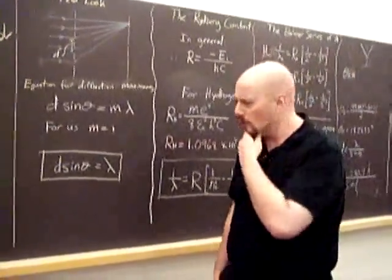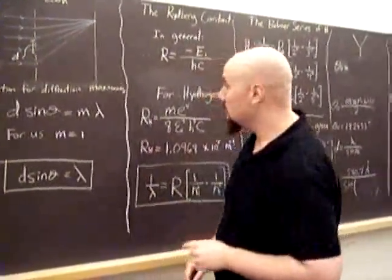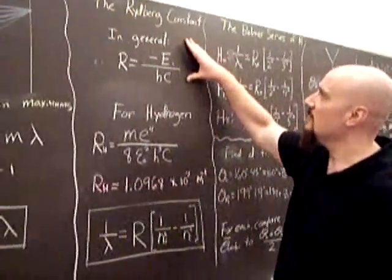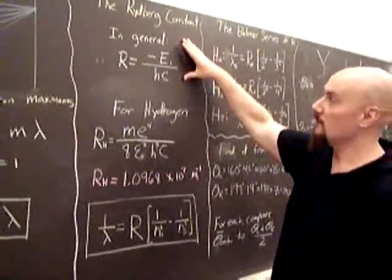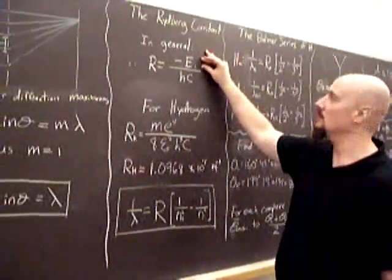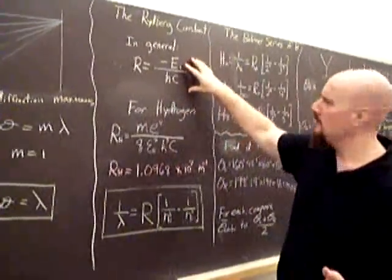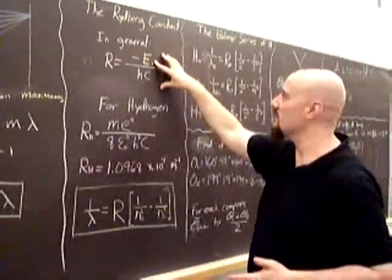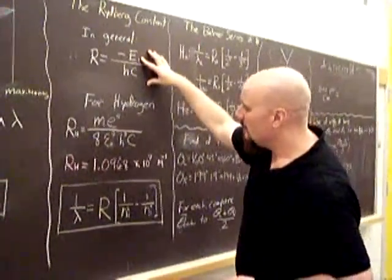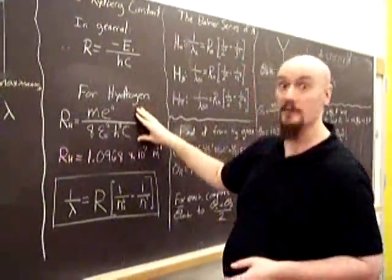And what we're going to do with this information is our ultimate goal is to find the Rydberg constant for hydrogen. In general, the Rydberg constant is minus the ground state energy divided by Hc, Planck's constant, and the speed of light. Now, for hydrogen, the ground state energy is minus 13.6 electron volts. It would be different for helium and so on.